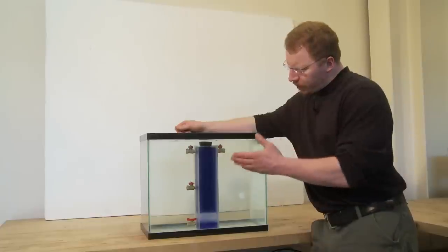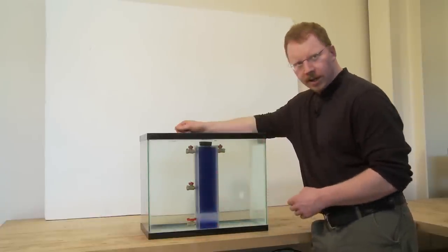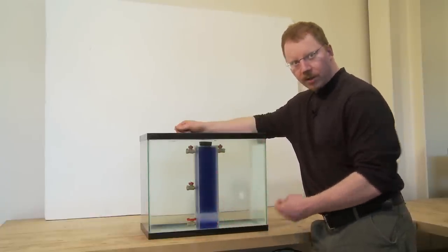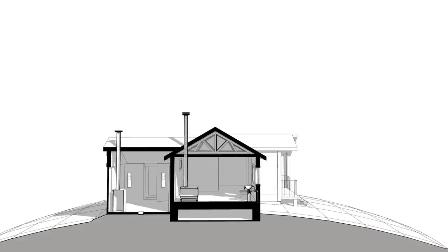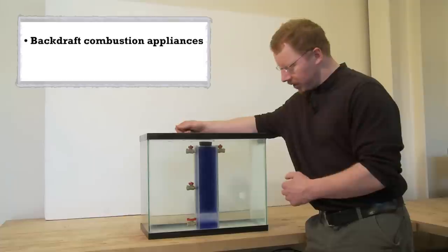If you have too much air leakage out of the top and you can't draw enough replacement air in from down low through leakage and holes, it may come in through a malfunctioning combustion appliance such as a boiler or a wood stove. Sometimes the stack effect will be powerful enough that it will actually pull wood smoke or combustion gas from a boiler into the house.